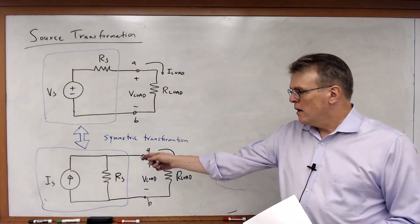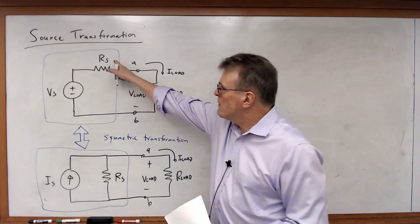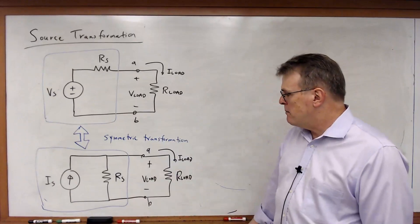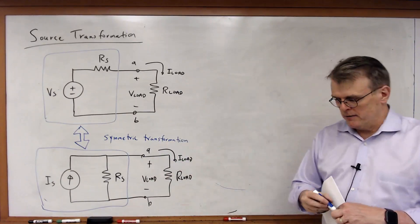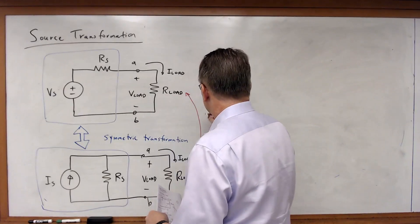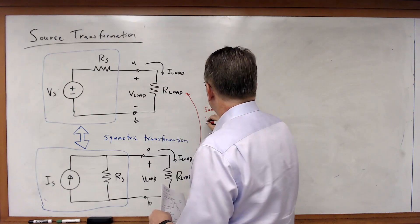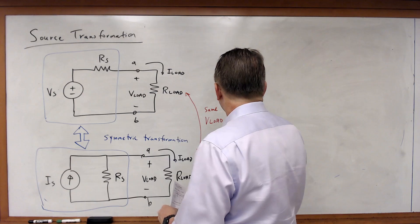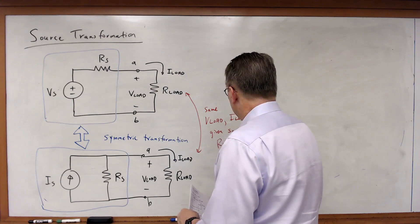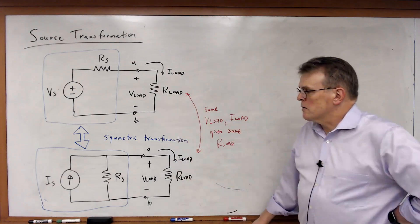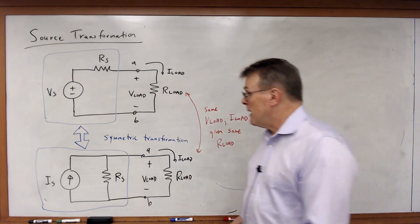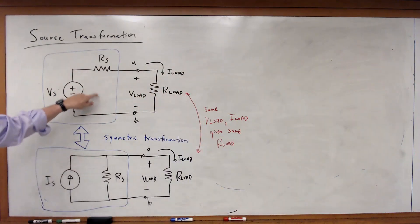I claim I can transform the voltage source in series with the resistor into a current source in parallel with the same resistor. R sub S is the same. And if I put R-load between terminals A and B, I'll get the same voltage and the same current — the same V-load and I-load given the same R-load.